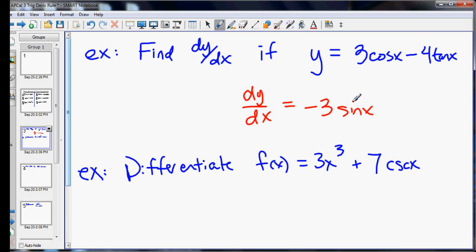Same here with the 4, the 4 just stays, and the derivative of tangent is secant squared x.